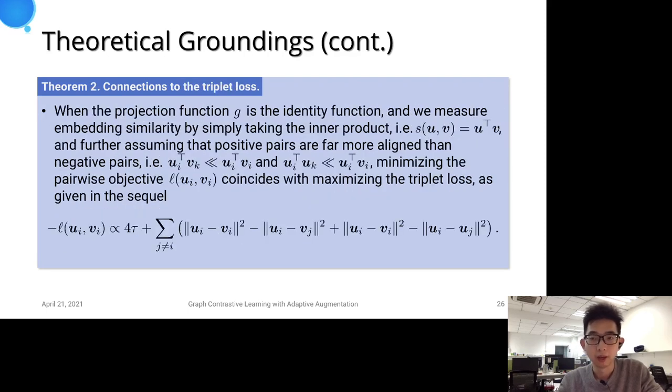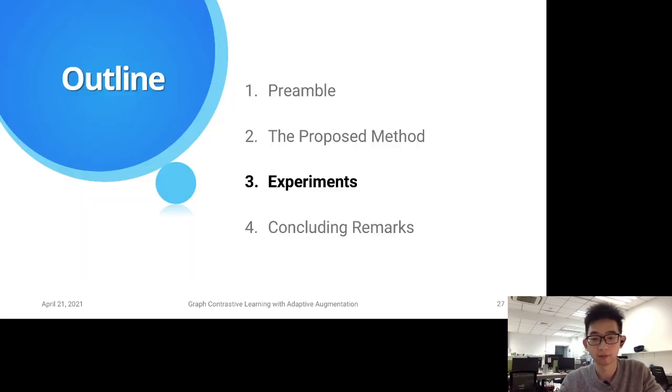Alternatively, we may view the objective from the metric learning perspective, where the pairwise objective coincides with the traditional triplet loss. In this way, we highlight the importance of appropriate augmentation schemes, which is often neglected in previous InfoMax-based methods.